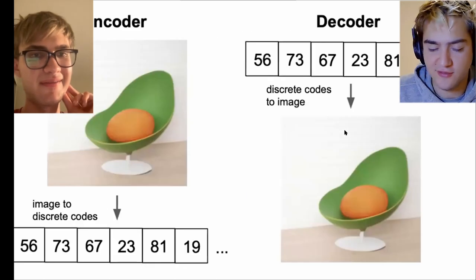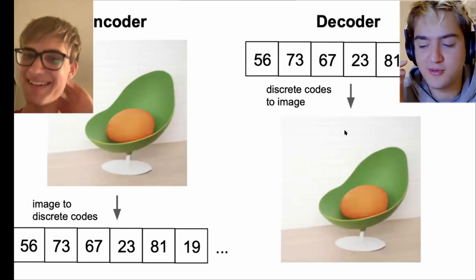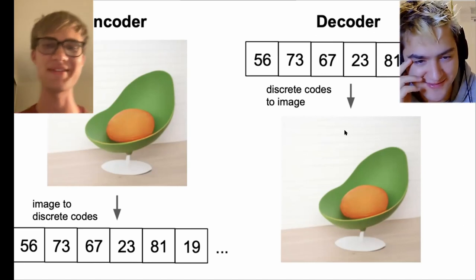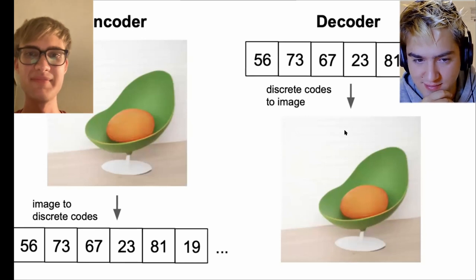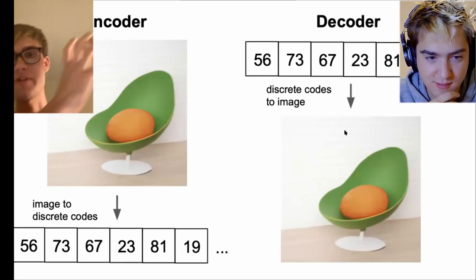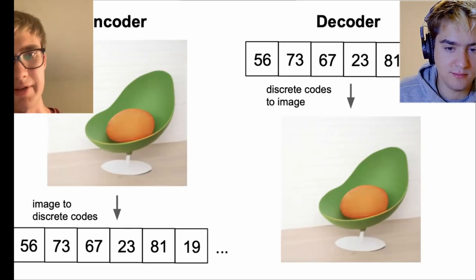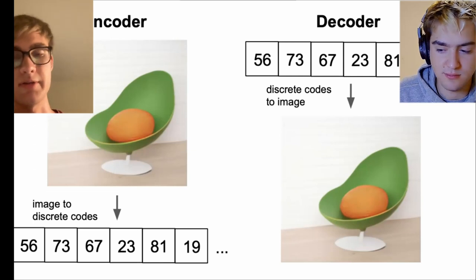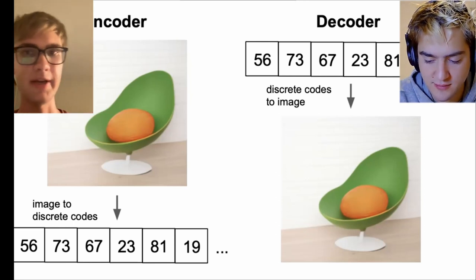Now we need to go into the math and understand how you put a beautiful avocado chair into discrete codes. On a high level, there are two parts to DALL-E. One part converts the image into a sequence of discrete codes. Then there's a corresponding decoder which can take a sequence of discrete codes and turn them into an image. That's one part of DALL-E - converting images to discrete codes and back.